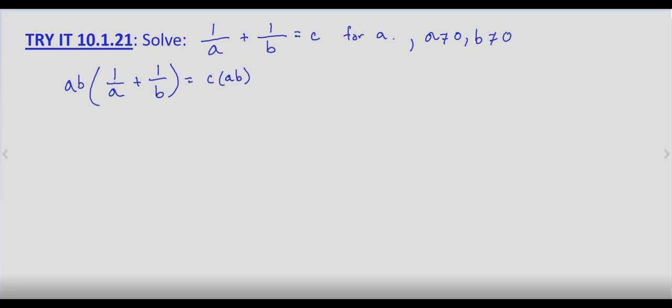So ab times 1 over a, that's going to be b, plus ab times 1 over b, that's going to be a, and that equals abc.